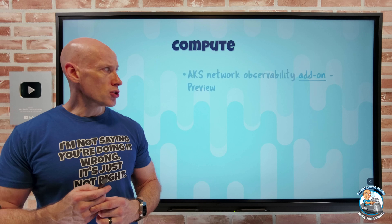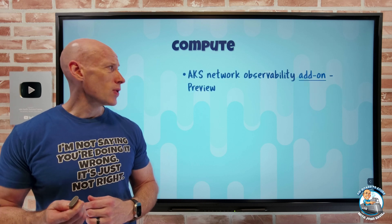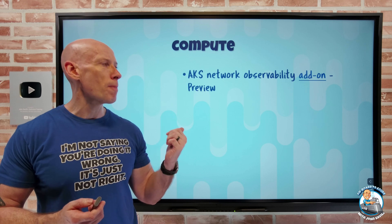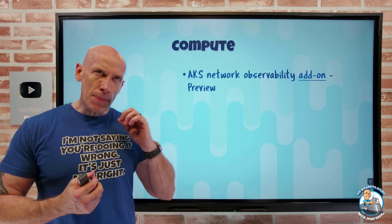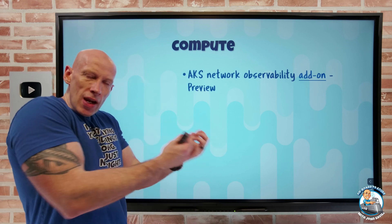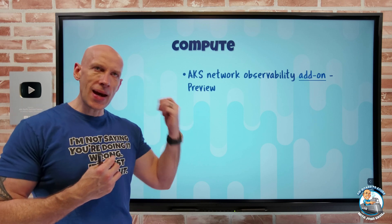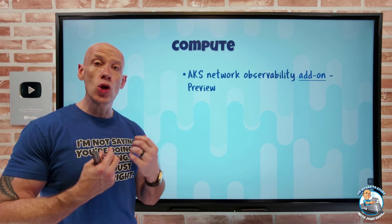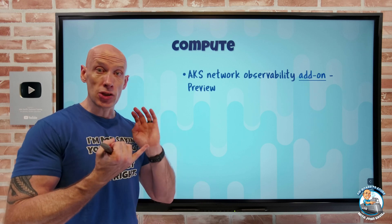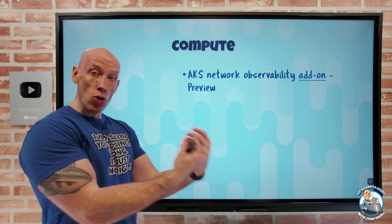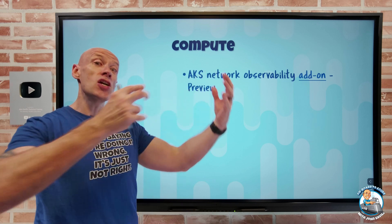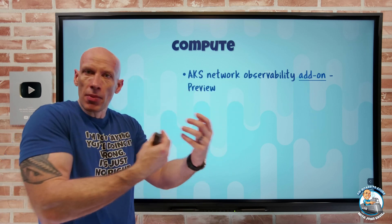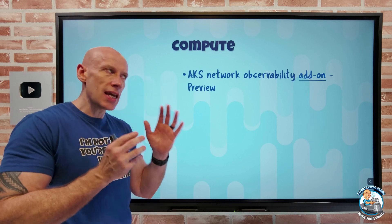On to what's new. On the compute side, we have the AKS Azure Kubernetes Service Network Observability Add-on. This is about the idea that I can scrape metrics from that managed Kubernetes service and ingest it into Prometheus — either Azure managed Prometheus or a bring-your-own Prometheus. And then I can visualize that with Azure managed Grafana or bring-your-own Grafana. That's the key around this.